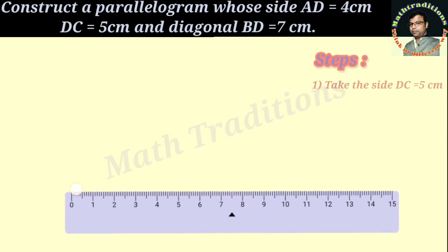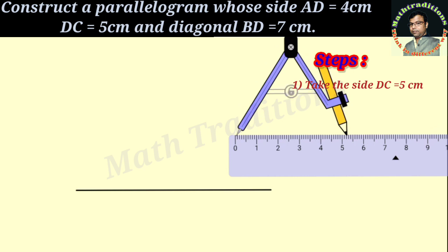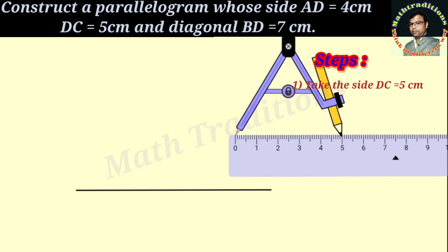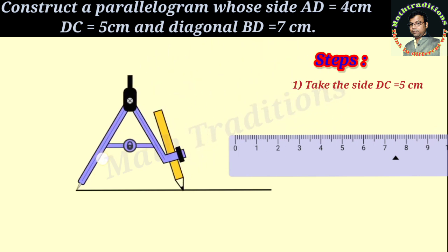In this class, we will construct a parallelogram whose side AD equals 4 cm, DC equals 5 cm, and diagonal BD equals 7 cm.